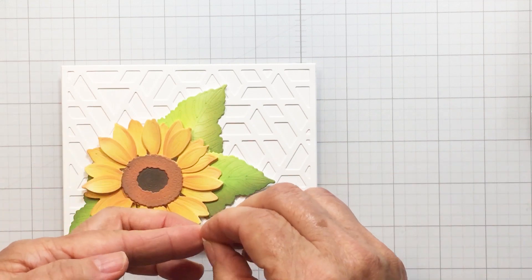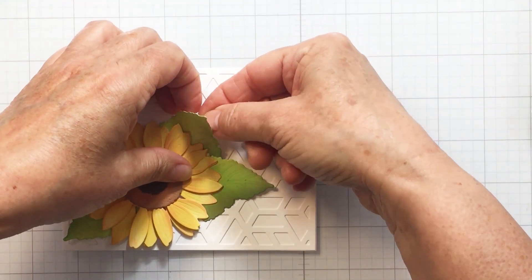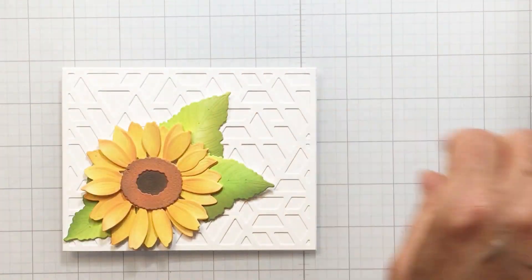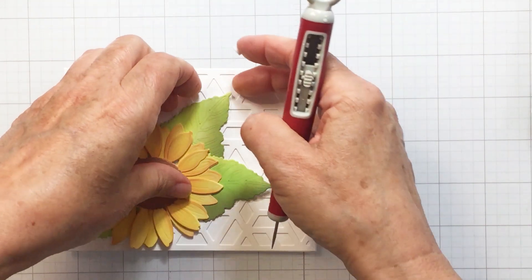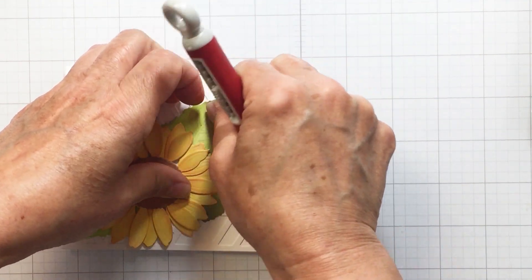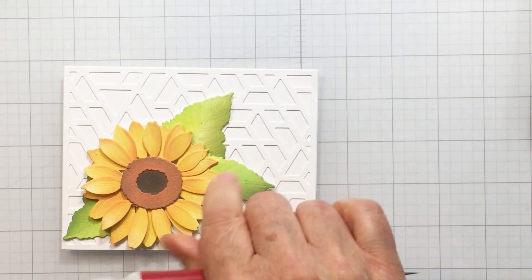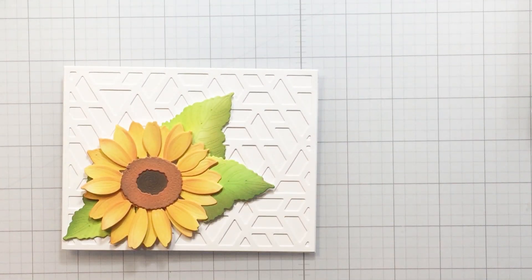I just love how the little bit of foam adhesive under the tips of each one of these leaves just gives those leaves a little bit of dimension. You can even curl those leaves up a little bit as well if you wanted to, just to create that little bit of extra texture on your project.